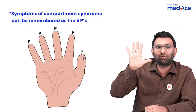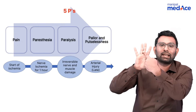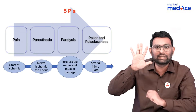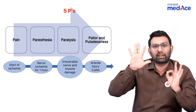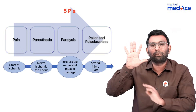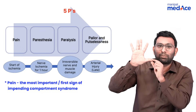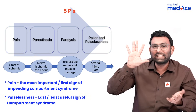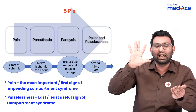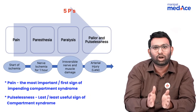The features of Compartment Syndrome can be remembered as the five Ps: pain, paresthesia, paralysis, pallor, and pulselessness. The most important and earliest complaint in impending compartment syndrome is pain on passive stretch. The least important sign, seen last, is pulselessness, which is why it is not very significant diagnostically.